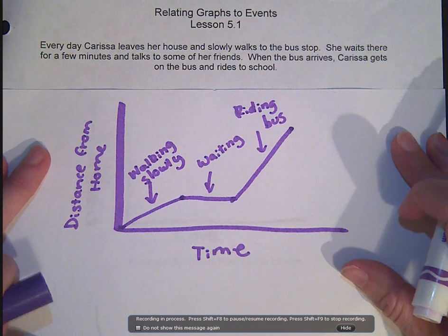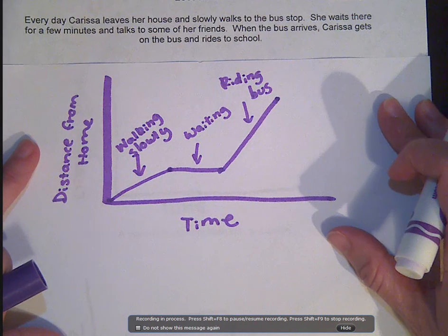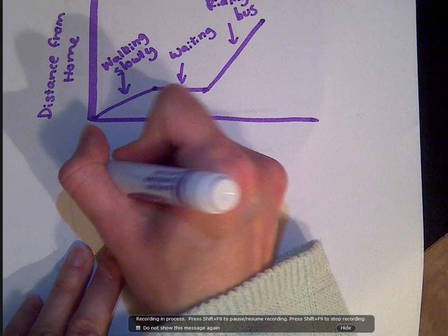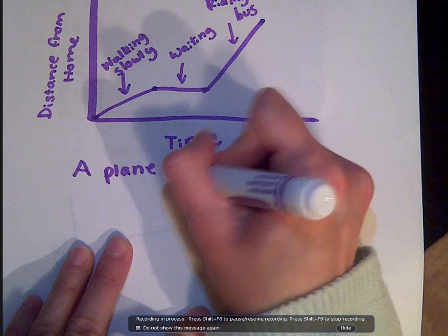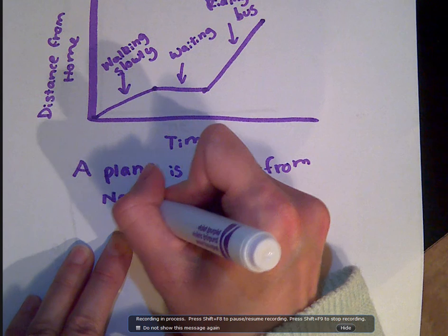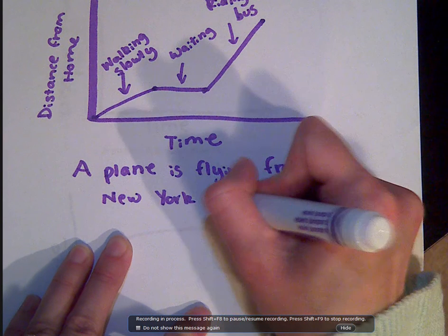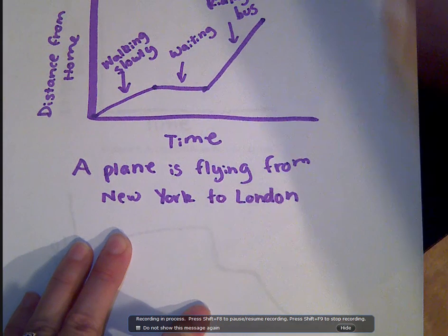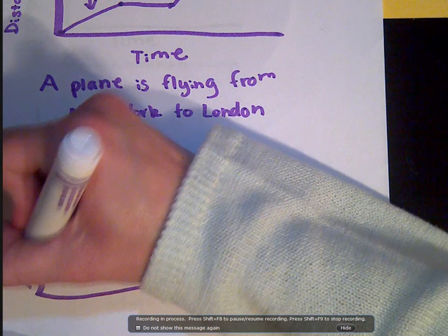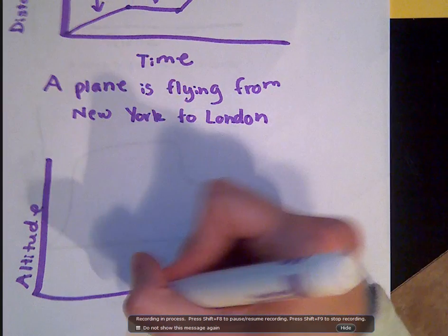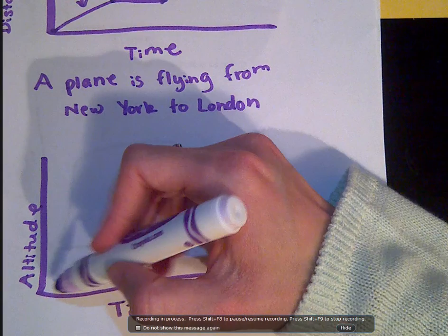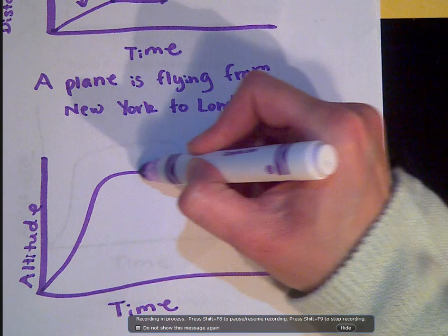I have another sketch we're going to look at. This one is going to be a plane flying from New York to London. For our graph, the y-axis is altitude and the x-axis is time. I'm going to draw a graph of what's happening with this plane, and then we're going to talk about what might be happening at each situation.